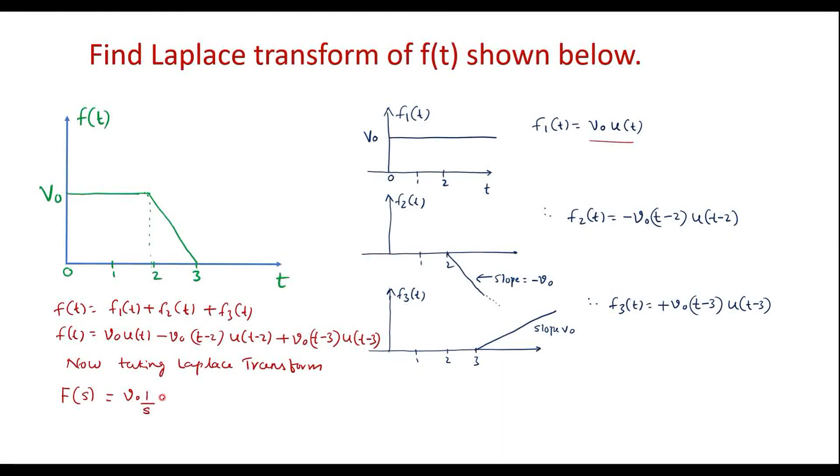Laplace transform of shifted ramp signal is e power minus 2s divided by s square plus v0